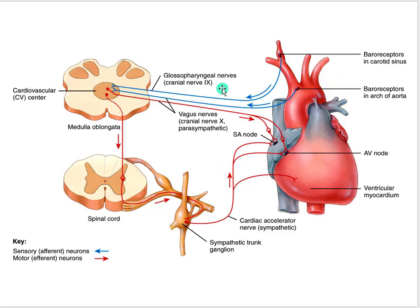Without rehashing the full baroreceptor response, when there is output to the SA node, AV node, or ventricular myocardium, heart rate and contractility will both increase. Either one alone, or both acting collectively, is going to increase cardiac output. And when you increase cardiac output, you're going to increase blood pressure.